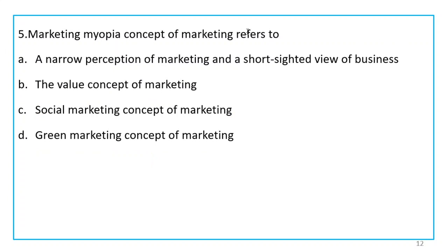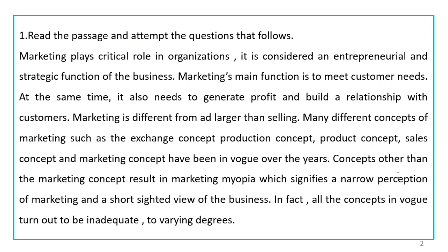Fifth question: Marketing myopia concept of marketing refers to — we have already covered this. The options are: a narrow perception of marketing and short-sighted view of business; the value concept of marketing; social marketing concept; green marketing concept. We already found in the paragraph that concepts other than marketing concepts result in marketing myopia, which signifies a narrow perception of marketing and a short-sighted view of business. So option A is correct.